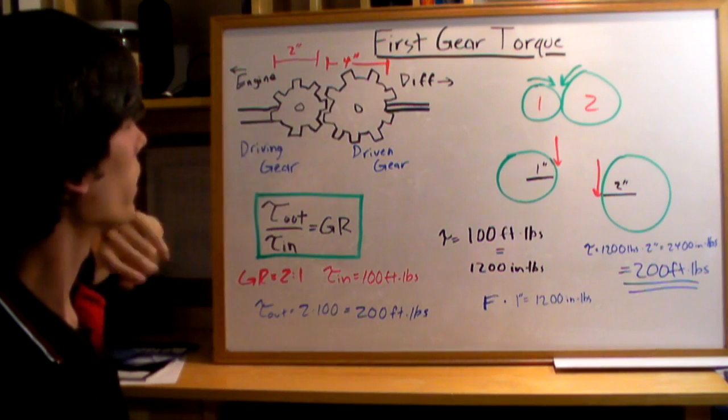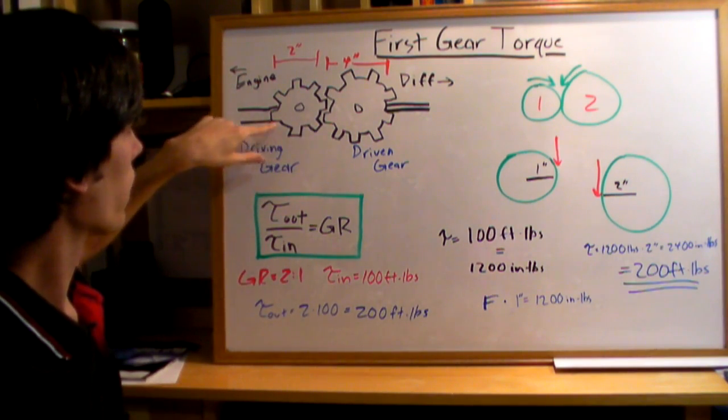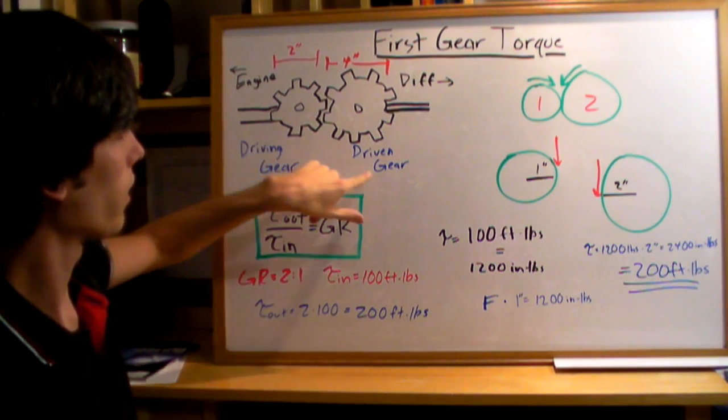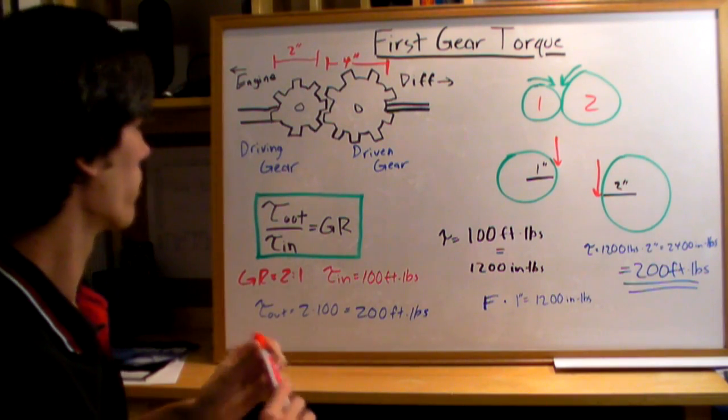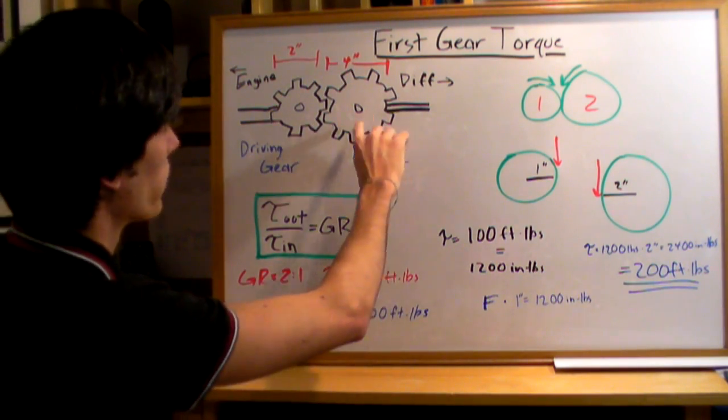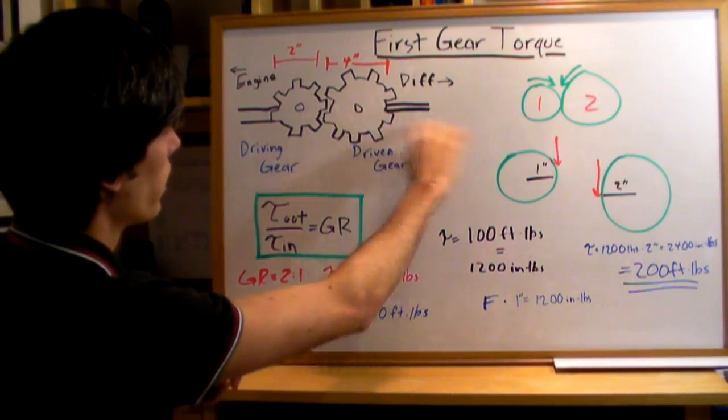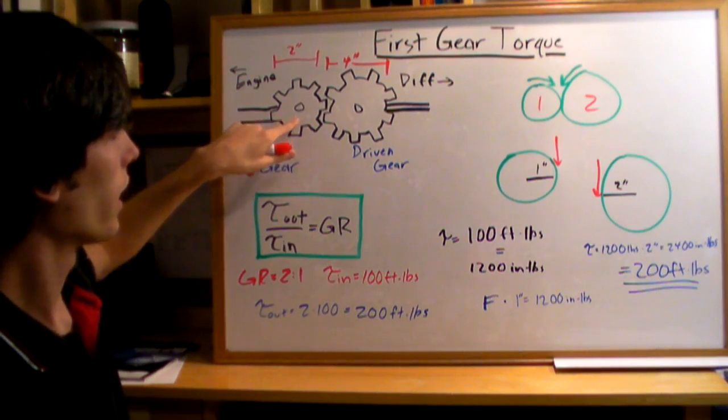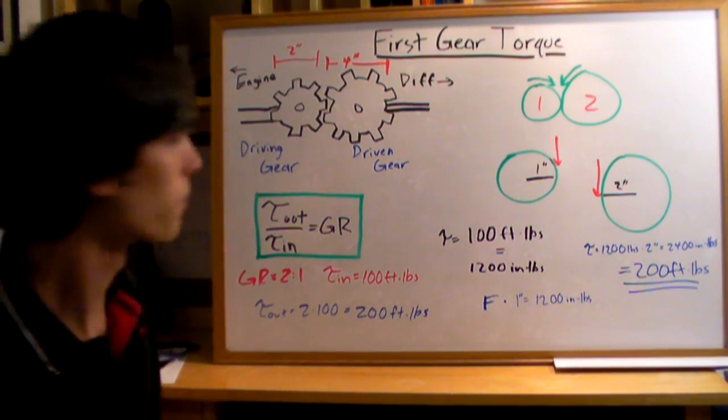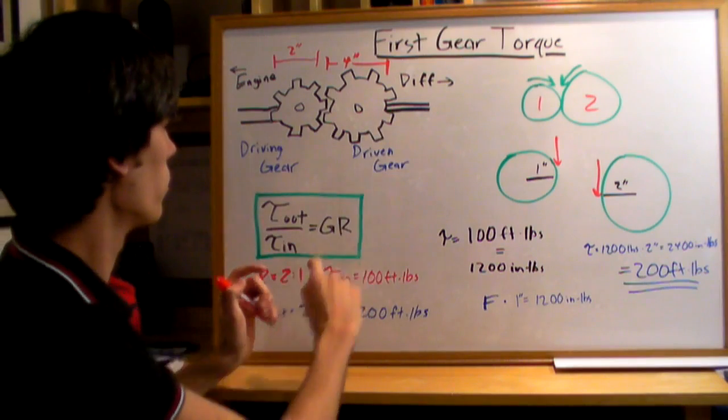So we're going to have a gear ratio of 2 to 1. We've got the 2 inch driving gear and the 4 inch driven gear. The ratio of the torques is going to be the torque output, the torque of this gear going to the differential, over the torque input, the torque coming from the engine, and that's equivalent to the gear ratio.